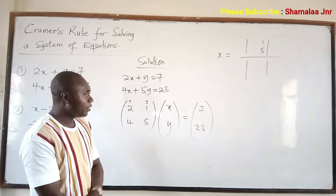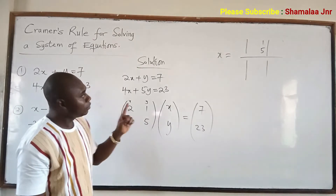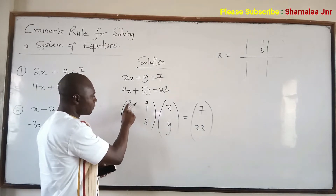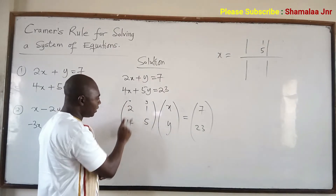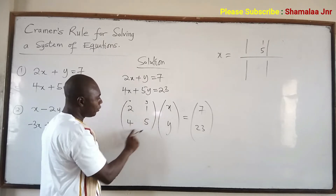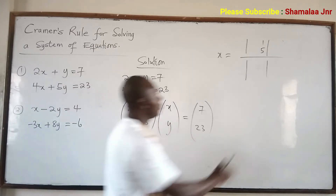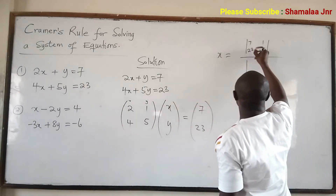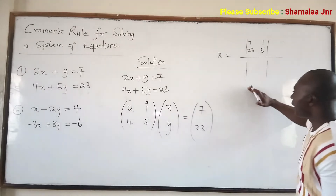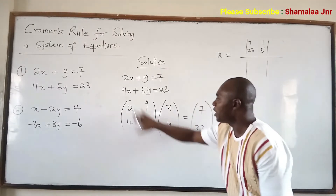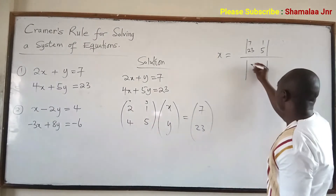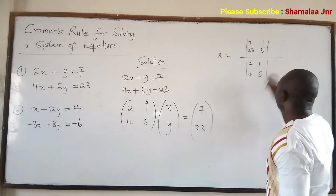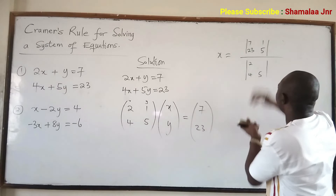Because you are finding the value of x, you replace the first column with the right-hand side values, giving you 7, 23 in place of 2, 4. You keep the y-column as 1, 5. Then you divide by the determinant of the original matrix: 2, 1, 4, 5.